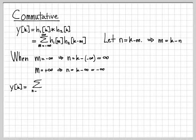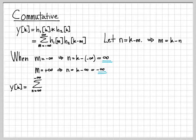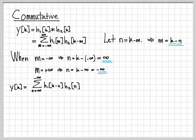So we can go ahead and rewrite this summation as the sum from n equals infinity — because that's what n is equal to when m is minus infinity — up to negative infinity, because that's what n is equal to when m is equal to positive infinity. Then we have h1 of k minus n, because if you rearranged the change of variable for m, you got m equal to k minus n, and then h2 of n, because we let n equal k minus m.